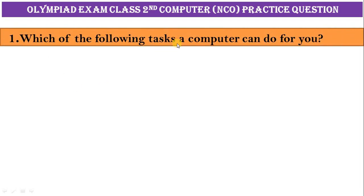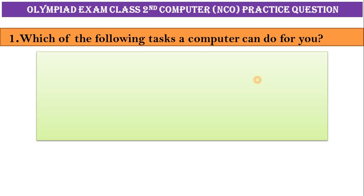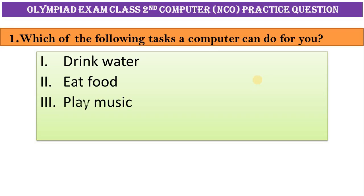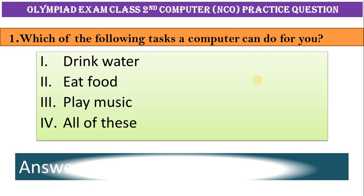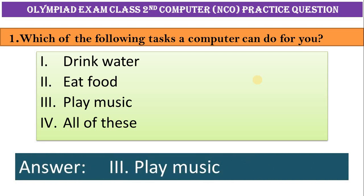Which of the following tasks a computer can do for you? One, drink water. Two, eat food. Three, play music. Four, all of this. Correct answer is option three, play music.